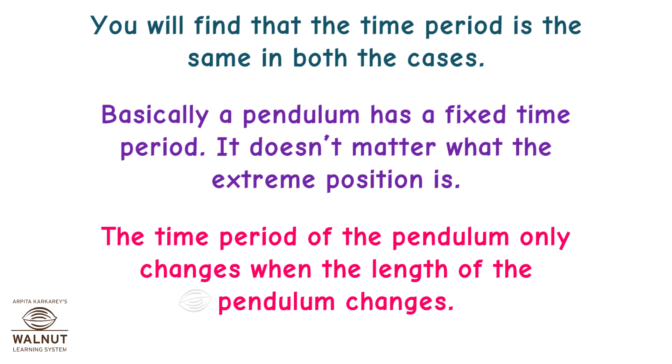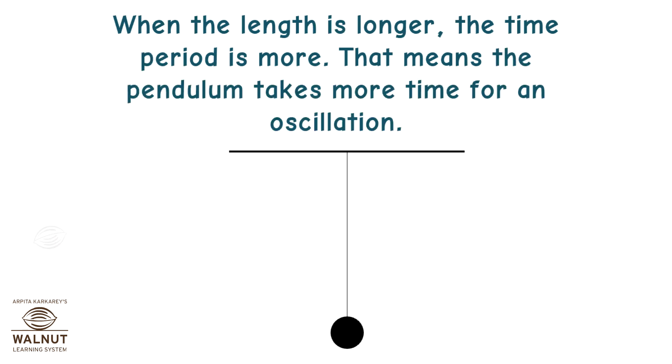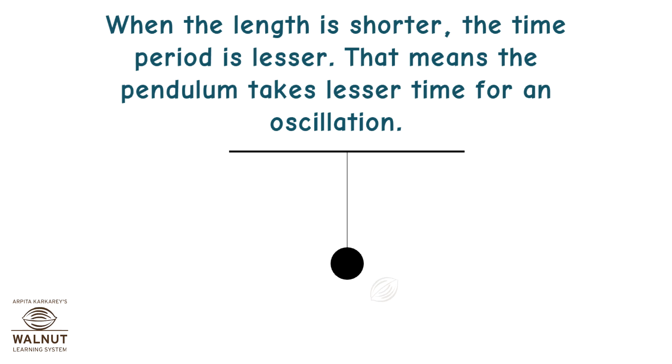The time period of the pendulum only changes when the length of the pendulum changes. When the length is longer, the time period is more. That means the pendulum takes more time for an oscillation. When the length is shorter, the time period is lesser. That means the pendulum takes lesser time for an oscillation.